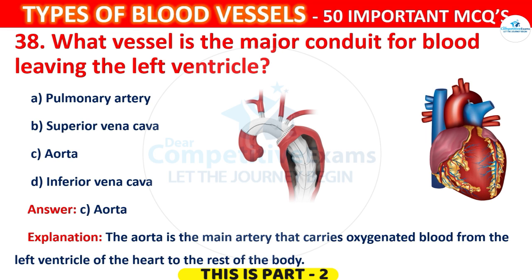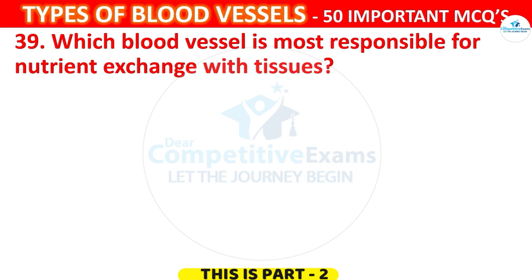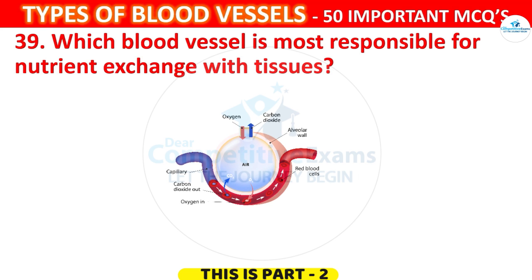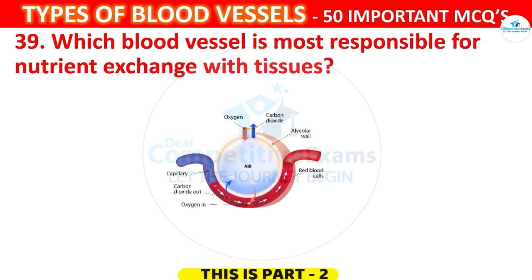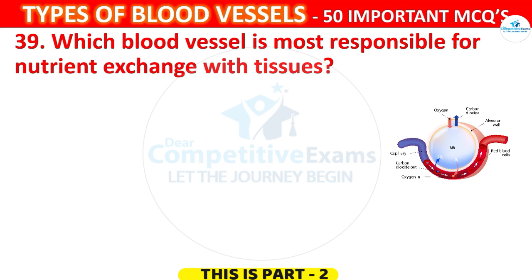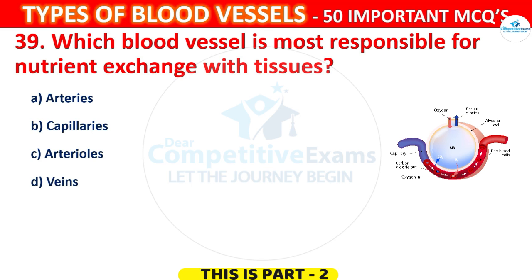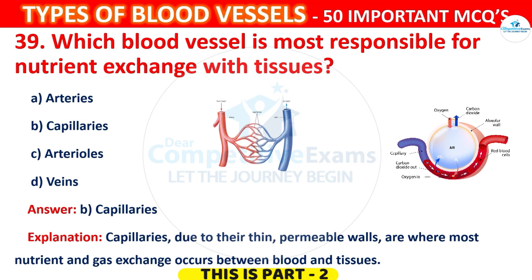Question 39. Which blood vessel is most responsible for nutrient exchange with tissues? The options are: Arteries, Capillaries, Artery walls, or Veins. The correct answer is B, Capillaries. Capillaries, due to their thin permeable walls, are where most nutrient and gas exchange occurs between blood and tissues.